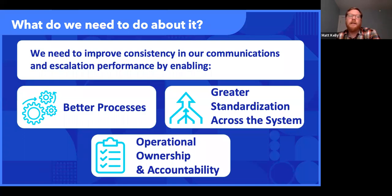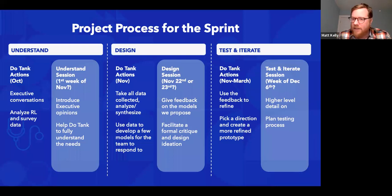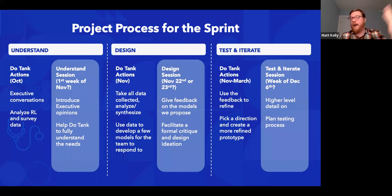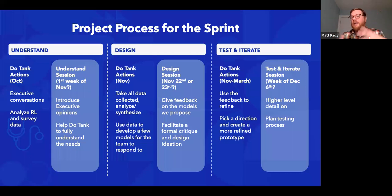This is a classic design sprint: an understand phase with research, a design phase where you're prototyping and building things — those prototypes don't need to be tangible, they can be conceptual like a process map — then a testing phase where you try it out, expose it to people, see what they like, what's missing, what works, and then iterate based on what you learned. Sometimes you'll see this shown in an infinity loop or circle — it's not always linear. You might go back to the understand phase because your fundamental assumptions aren't correct.